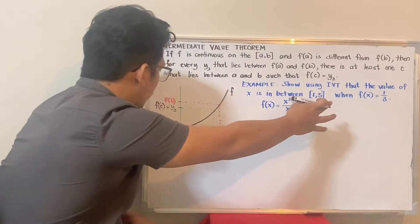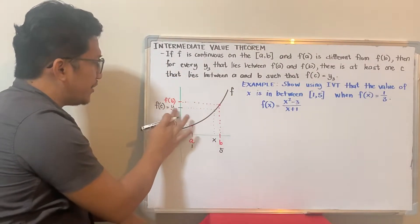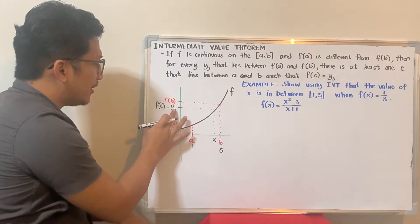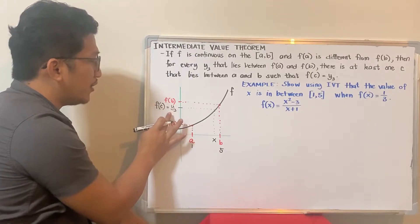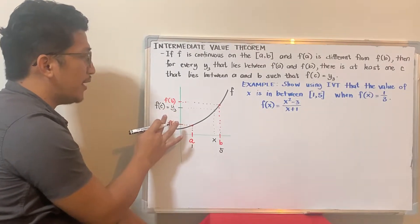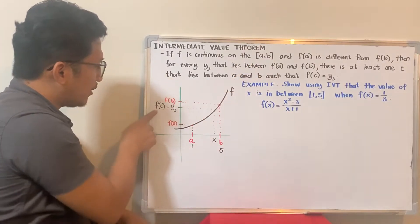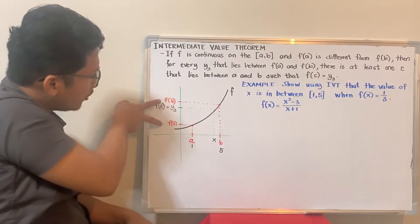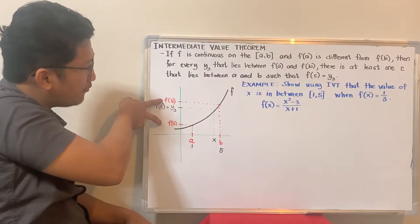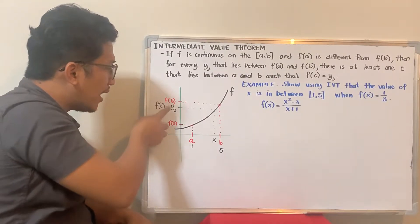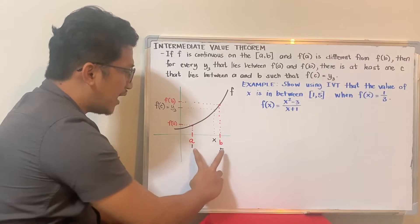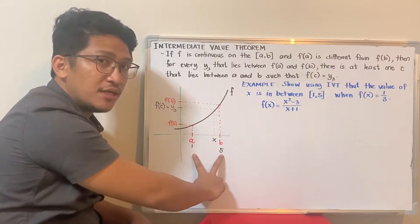When f of x is equal to 1/3, so meaning 1/3 is the y value. According to intermediate value theorem, if it's in between f of a and f of b, automatic, the x value is in between a and b.